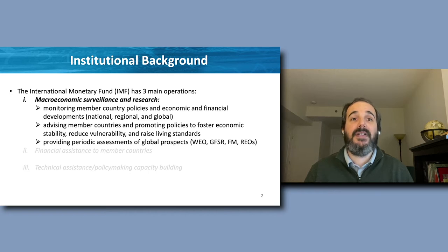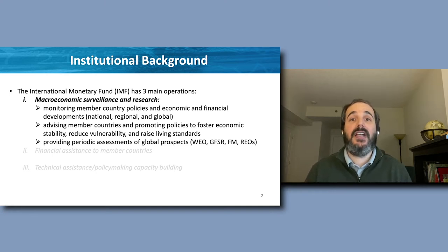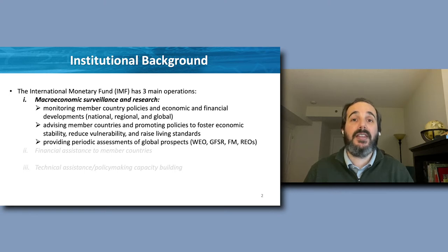The IMF advises member countries and promotes policies to foster economic stability, reduce vulnerability, and raise living standards. In practice, IMF staff visit every member country — 190 of them — usually every year, as part of the so-called Article IV consultation with the authorities. The IMF also provides periodic assessments of economic prospects through its flagship publications, like the World Economic Outlook, the Global Financial Stability Report, the Fiscal Monitor, the External Sector Report, and various regional economic outlooks.